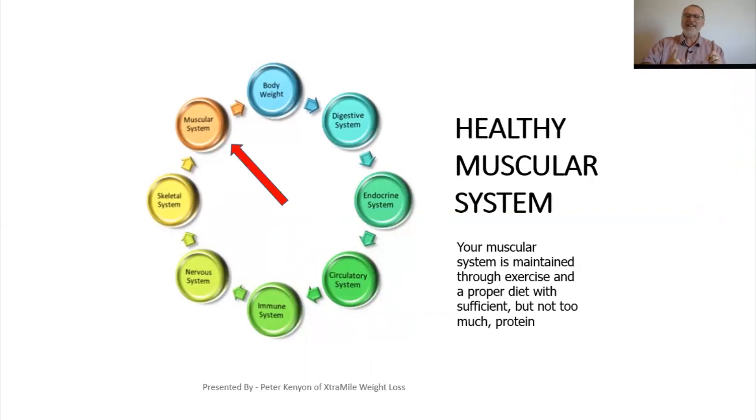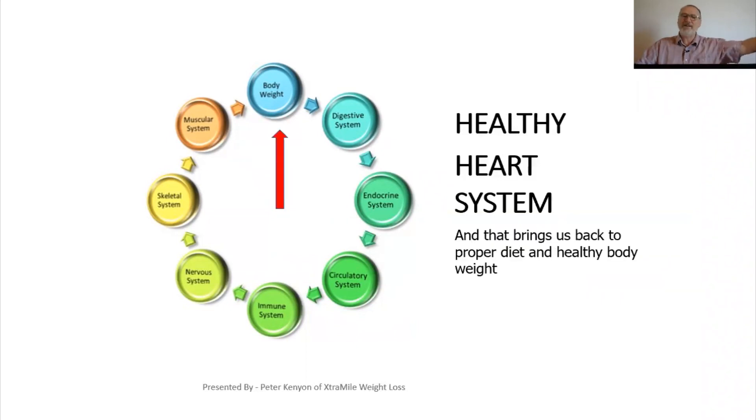And guess what? Your muscular system is maintained through exercise and proper diet with sufficient but not too much protein. So guess what? Everything that we're doing to help the digestive system, the endocrine system, the circulatory system, the immune system, the nervous system, skeletal system, all goes to help the muscular system, which brings us back to a healthy body weight because all those things are required to bring about a healthy body weight.